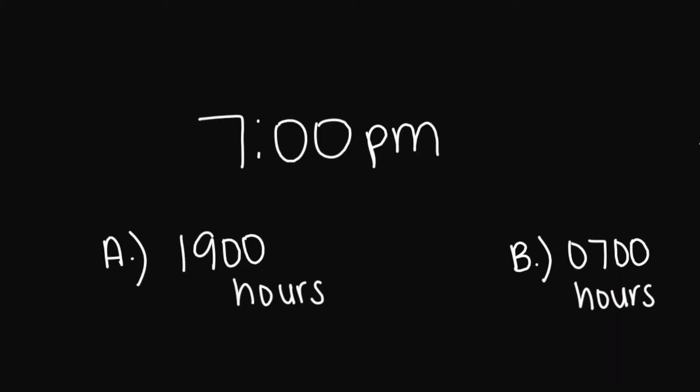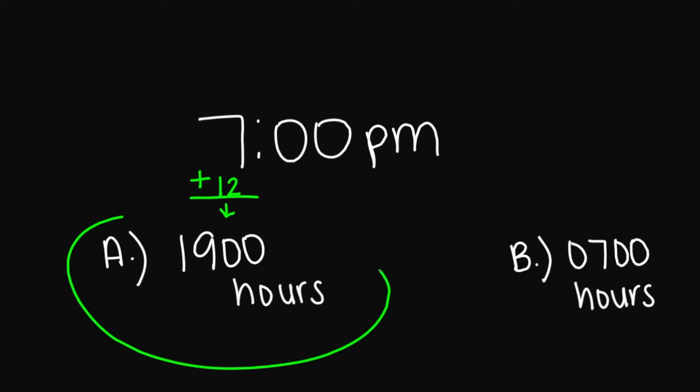Let's look at this example: 7 p.m. military time. Is it A, 1900 hours, or B, 0700 hours? Because this is the afternoon, I'm going to add 12, and this is going to give us A, 1900 hours.